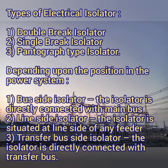Depending upon position, isolators are classified into three types: bus side isolator, line side isolator, and transfer bus side isolator. The bus side isolator is connected very near to the main bus. The line side isolator is situated on the line side, away from the bus, where the line connects to another station. The transfer bus side isolator is used in systems with a two-bus or single-bus-with-transfer-bus arrangement. In case of a main bus failure, the bypass isolator on the transfer bus side gets closed, keeping the line healthy.